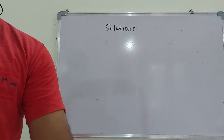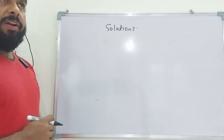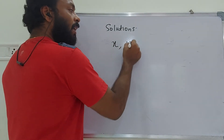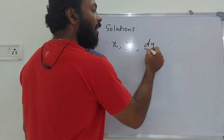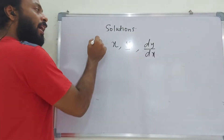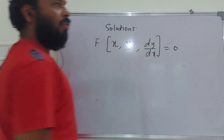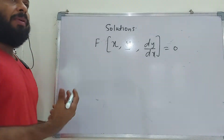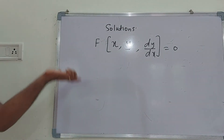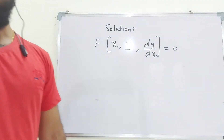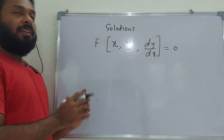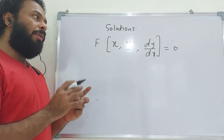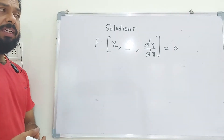Now we move to first-order ordinary differential equations. In general, a first-order ODE involves the independent variable x, dependent variable y, and the first-order derivative dy/dx. In the general solution of a first-order equation, there is one arbitrary constant, and a particular solution is obtained by assigning a specific value to that constant.